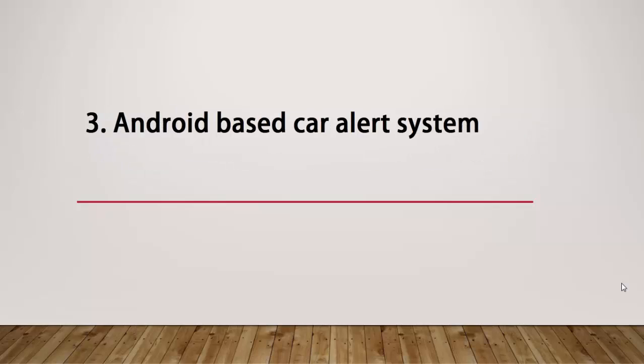The third topic is an Android based car alert system. The latest cars have GPS and other facilities, and they give notifications if you are not wearing a seat belt or a door is not properly closed. These notifications are available in the car panel itself, but by implementing this using an Android phone, we get alerts as well as the ability to monitor the car's performance.